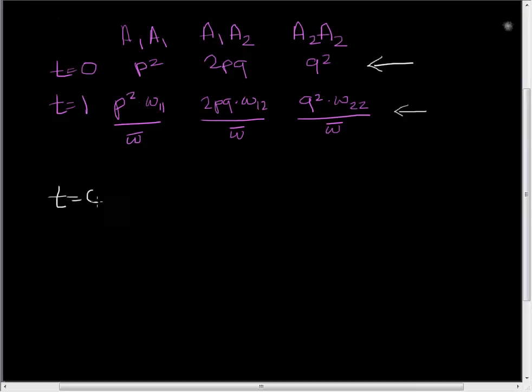We also know that at time equals zero, we expect to see this following equation: p squared plus 2pq plus q squared equals one. If this equation is true, then we can solve for p. When we solve for p, we see that p equals p squared plus pq.